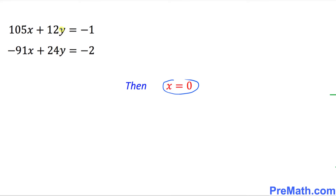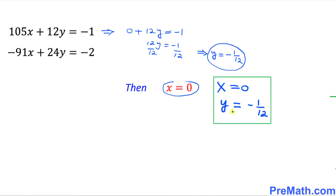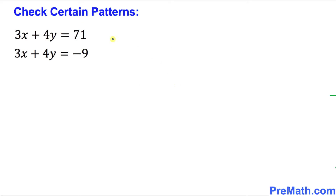Let's go ahead and plug x equal to 0 into the very first equation. That means this whole term becomes 0, giving us 0 plus 12y equals negative 1. So 12y equals negative 1. Dividing both sides by 12, y turns out to be negative 1 over 12.